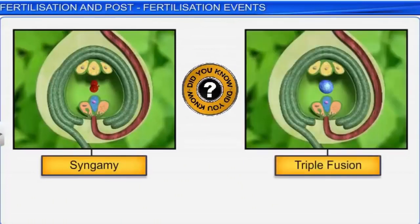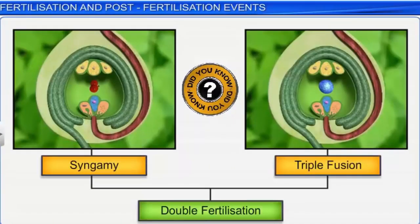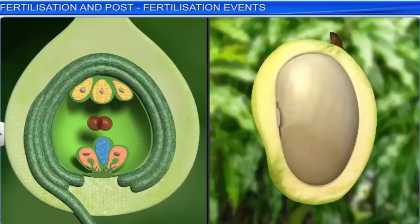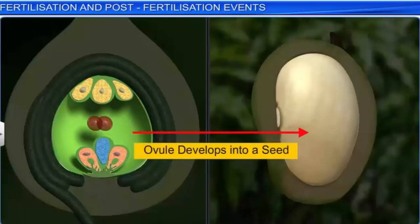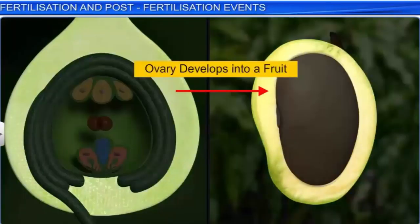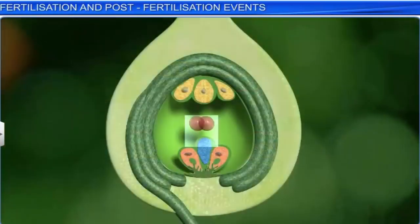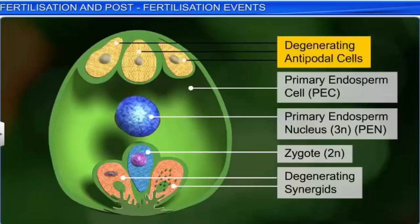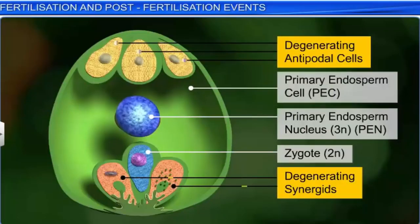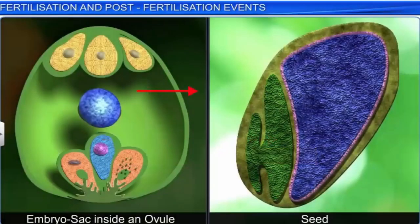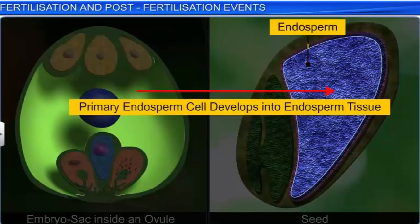Syngamy and triple fusion together represent double fertilization — a phenomenon unique to flowering plants. Double fertilization is followed by several post-fertilization events which eventually transform the ovule into a seed and the ovary into a fruit. These events include degeneration of the antipodals, synergids, and the development of the zygote into an embryo, and the primary endosperm cell into the endosperm, by repeated mitotic divisions.